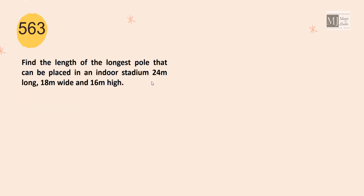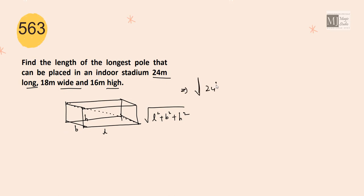Find the length of the longest pole that can be placed in an indoor stadium. In a parallelepiped or a cuboid, the longest pole which can be put in this cuboid with length L, breadth B and height H is the diagonal of this cuboid. The diagonal of this cuboid is given by root over L square plus B square plus H square. So in our case, the length would be square root of 24 square plus 18 square plus 16 square. So the length of the longest pole that can be placed in this cuboid indoor stadium is 34 meter.